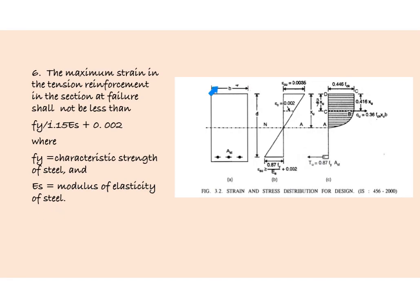b is the breadth of beam, d is the depth of beam, Ast is the area of steel. Maximum strain at outermost fiber is 0.0035 at stress 0.67 fck, and at strain 0.002.